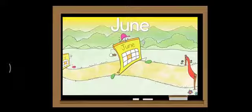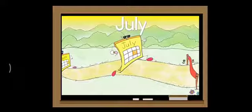June — J-U-N-E — June. Note: the E is silent. July — J-U-L-Y — July.